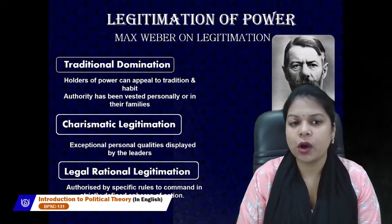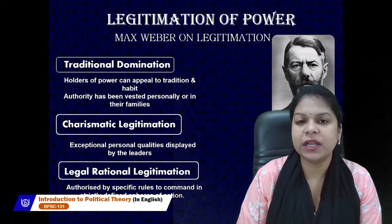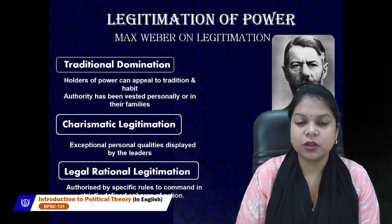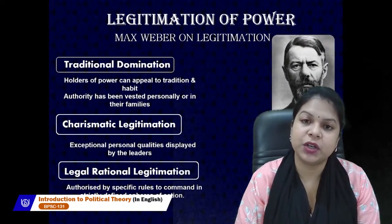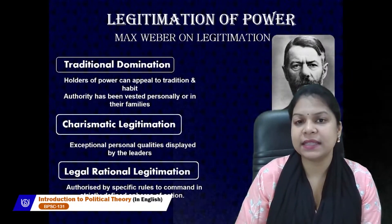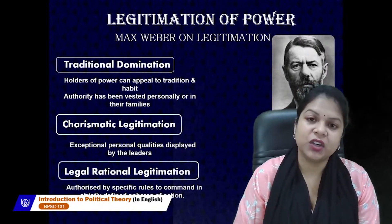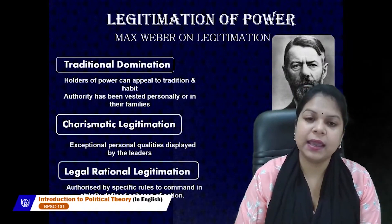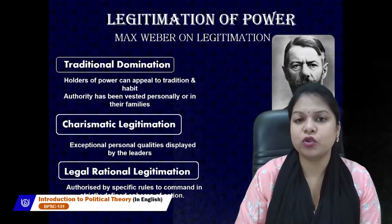In this first block, we also read about legitimation of power, where Max Weber talks about three types of domination. The first is traditional domination, where holders of power appeal to tradition and habit, and authority has been vested personally or in their families. Because of traditions going on since ancient times, power is vested in a person because of his family structure. For example, a king becomes king — even if not capable — because he traditionally had that power.